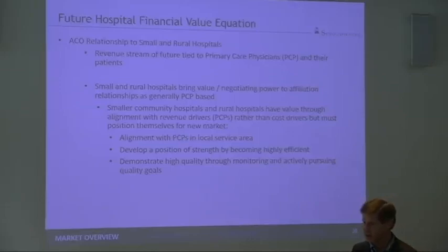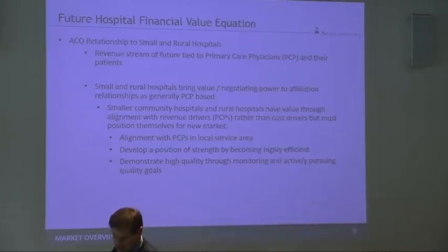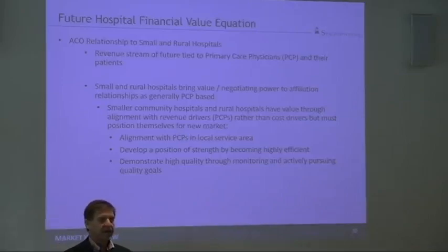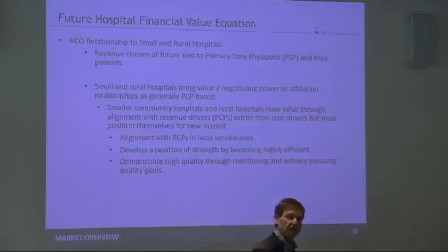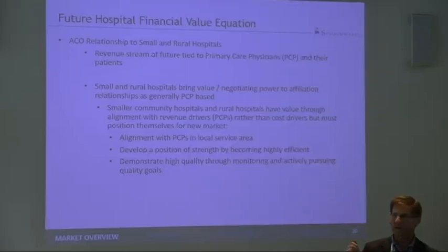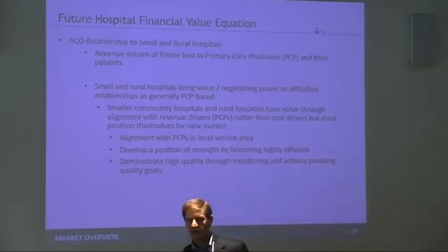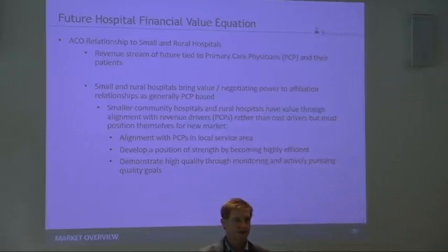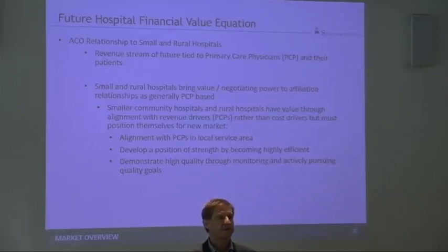Back in 2012, when I was reading the ACO regulations, I remember reading a line that really changed the way I fundamentally think. It said: a primary care physician can belong to one accountable care organization. Hospitals and specialists can belong to multiple accountable care organizations. Now, why did that one line strike this Arthur Anderson-trained CPA like nothing I'd ever read before?